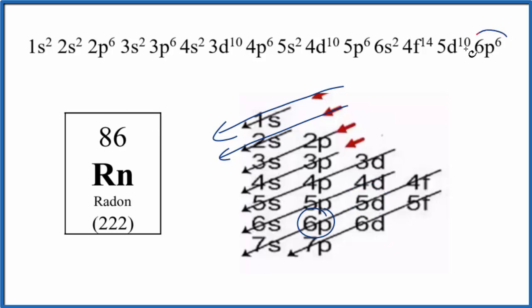We have our 6p, we put the 6 in there and that's the 6p6. So this is the electron configuration for radon, Rn.